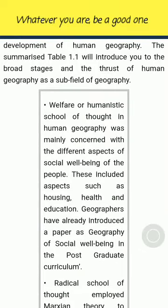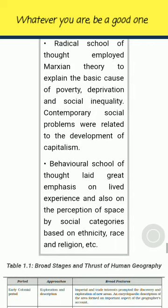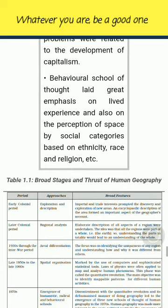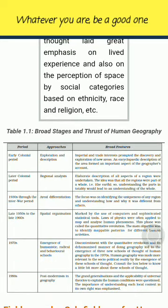Table 1.1 introduces broad stages and the thrust of human geography as a subfield of geography. The welfare or humanistic school of thought was mainly concerned with different aspects of social well-being of the people, including housing, health and education. The radical school of thought employed Marxian theory to explain the basic cause of poverty, deprivation and social inequality, relating contemporary social problems to the development of capitalism. The behavioral school of thought laid great emphasis on lived experience and on the perception of space by social categories based on ethnicity, race and religion.